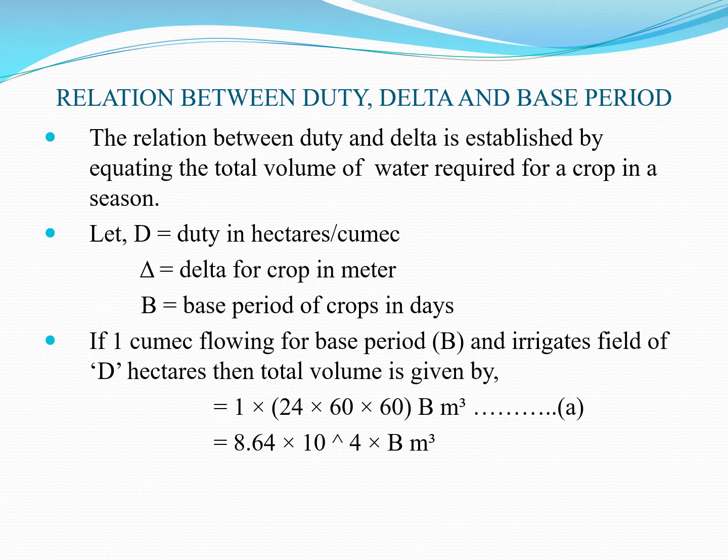The next point is the relation between duty, delta, and base period. The relation between duty and delta is established by equating the total volume of water required for a crop in a season. Let capital D be the duty in hectares per cumec, delta be the delta for crops in meters, and capital B be the base period of crops in days.